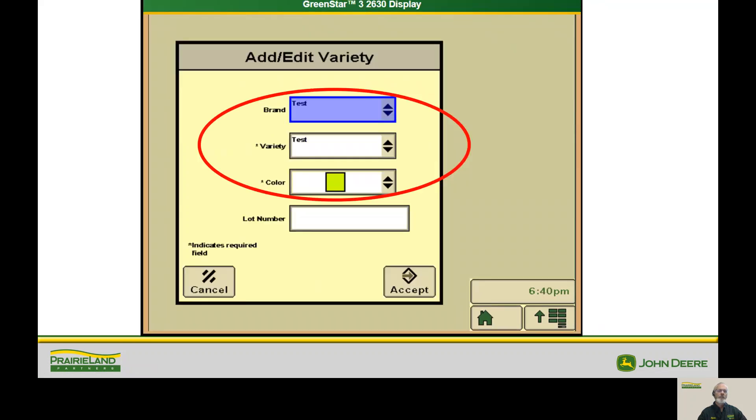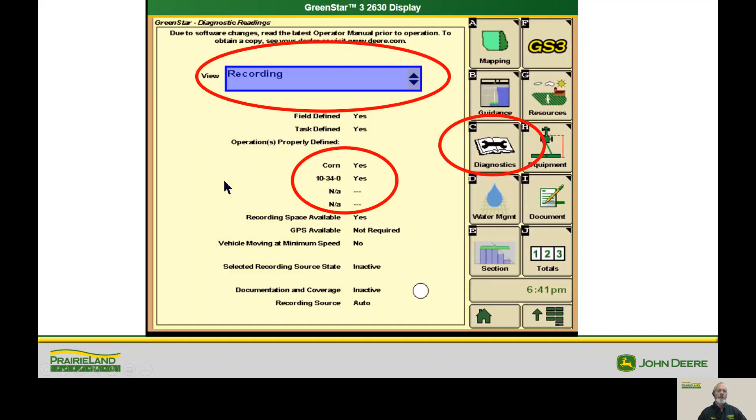So now we'll hit put in a variety. Again, we have the little dots. Brand is optional. A variety is mandatory, but these two are needed. So once we have that entered in, hit accept. And now we're going to go and check our work.